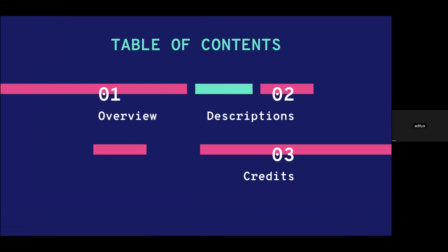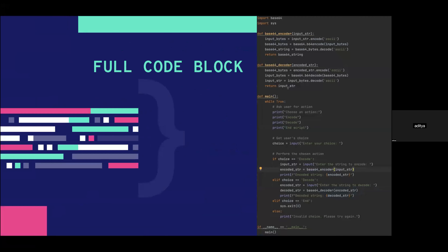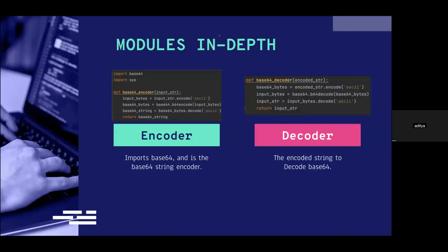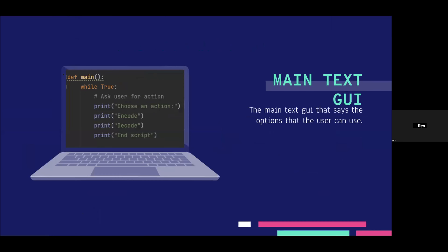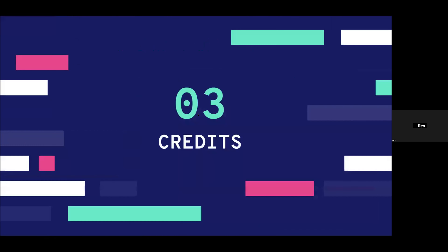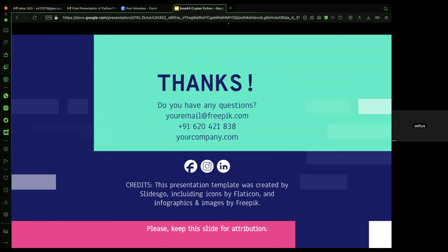This is the table of contents — the overview, descriptions, and credits. The overview is the full code block. In the beginning I have to import Base64 and the system, which we'll go into. For the encoder, you first have to import Base64 and the system, and this is the entire encoded string. On the right is the decoder. The main text UI is the actual print screen that asks which options you can use. The input is the choice that is defined — if you get the choice it executes the encoded string, otherwise it restarts the script. That's pretty much it.